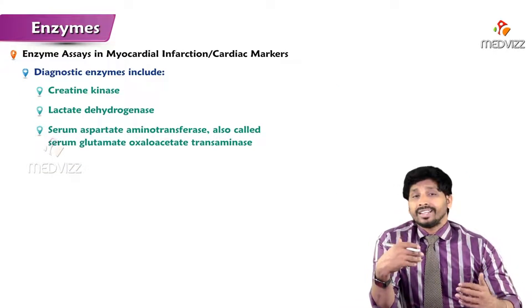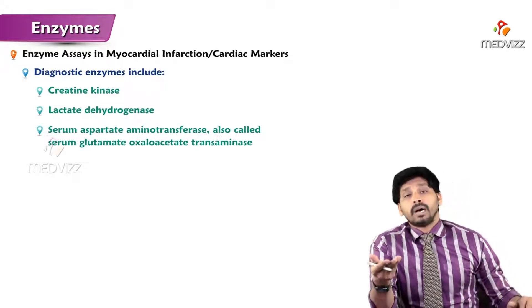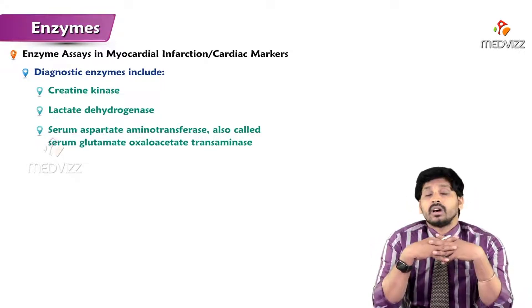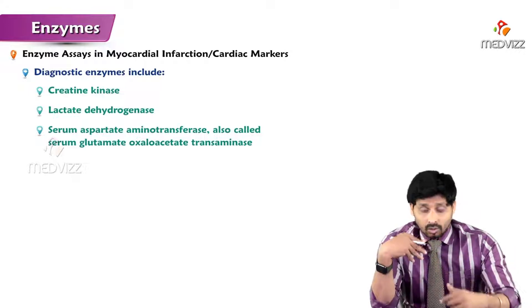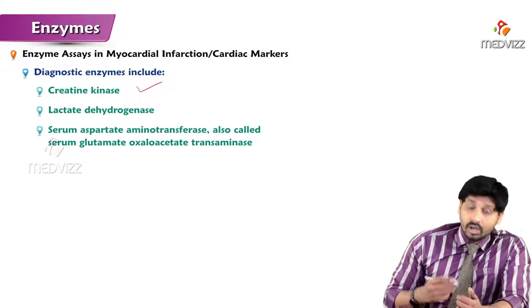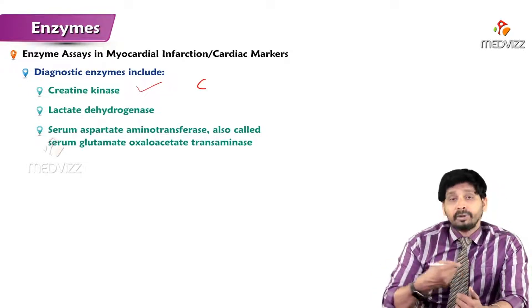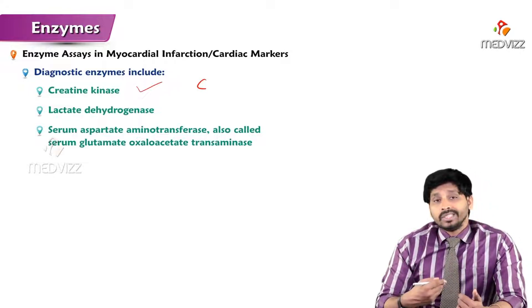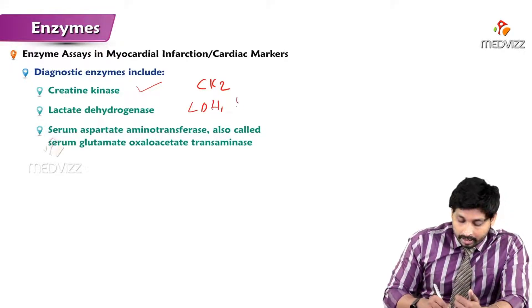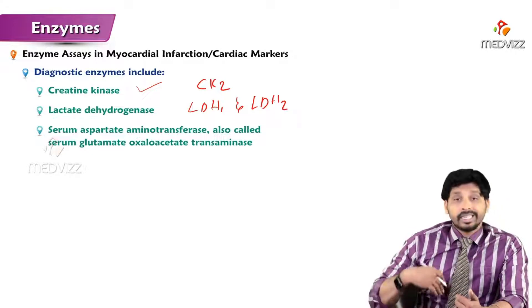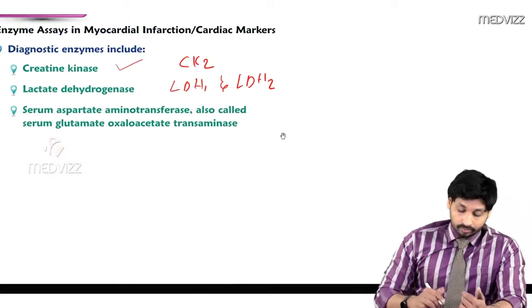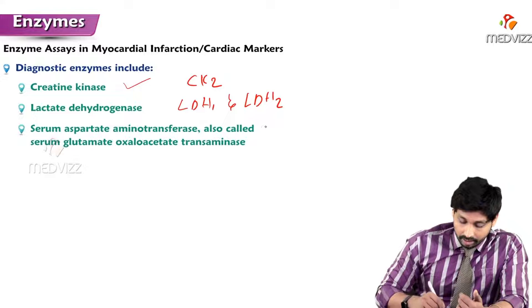Next, organ-specific markers — myocardial infarction. The enzymes which are elevated in myocardial infarction serve as cardiac markers. For diagnostic purposes in myocardial infarction: creatine kinase 2 (CK2), which we discussed in previous videos, is elevated. Lactate dehydrogenase LDH1 and sometimes LDH2 are also involved, and serum aspartate aminotransferase (AST) is also elevated during myocardial infarction.